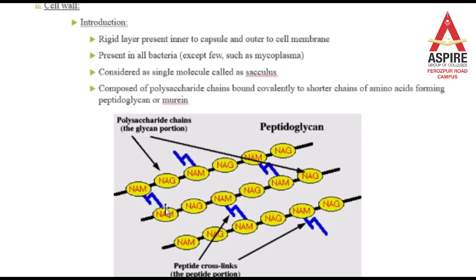You can see small chains of amino acids attached to larger molecules of polysaccharide. There are few small molecules of amino acids while there are large molecules of polysaccharide. This structure is known as peptidoglycan or murein. This is a very important MCQ: the bacterial cell wall is made up of peptidoglycan.